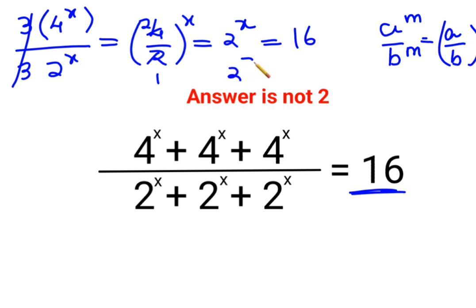Now 2^x we can write it as it is and 16 can be written in terms of 2 which is 2^4. Since the bases are same, I can directly say that x is equal to 4.